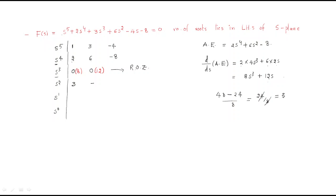The coefficient -8 is taken directly. Moving to the s¹ row: (3×12 - 8×8) / 3 = (36 - 64) / 3 = -28/3... so s¹ gives the value 100/3. And for s⁰ we have -8.